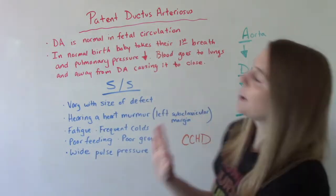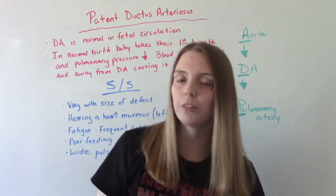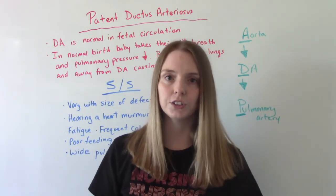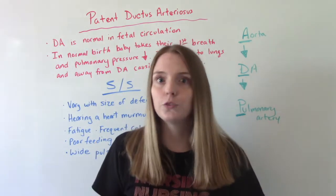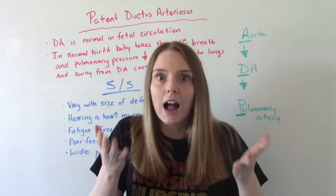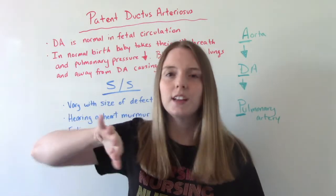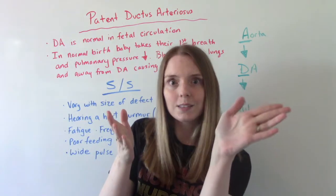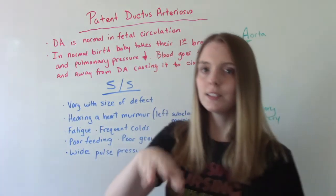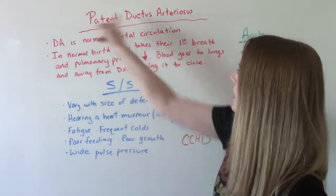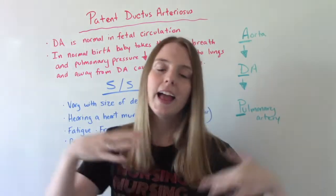So a quick little anatomy review. The ductus arteriosus is a normal thing that occurs in fetal circulation. Before the baby is born, the pressure in their lungs — because their lungs are full of fluid as a fetus — is super high. Super high pressure, super high resistance, so the blood doesn't really want to go to the lungs. It needs to go somewhere else, so it takes a shortcut, or what we call a shunt. We have three shunts, one of which is the ductus arteriosus, and this is a normal thing that happens in everybody's body as a fetus.